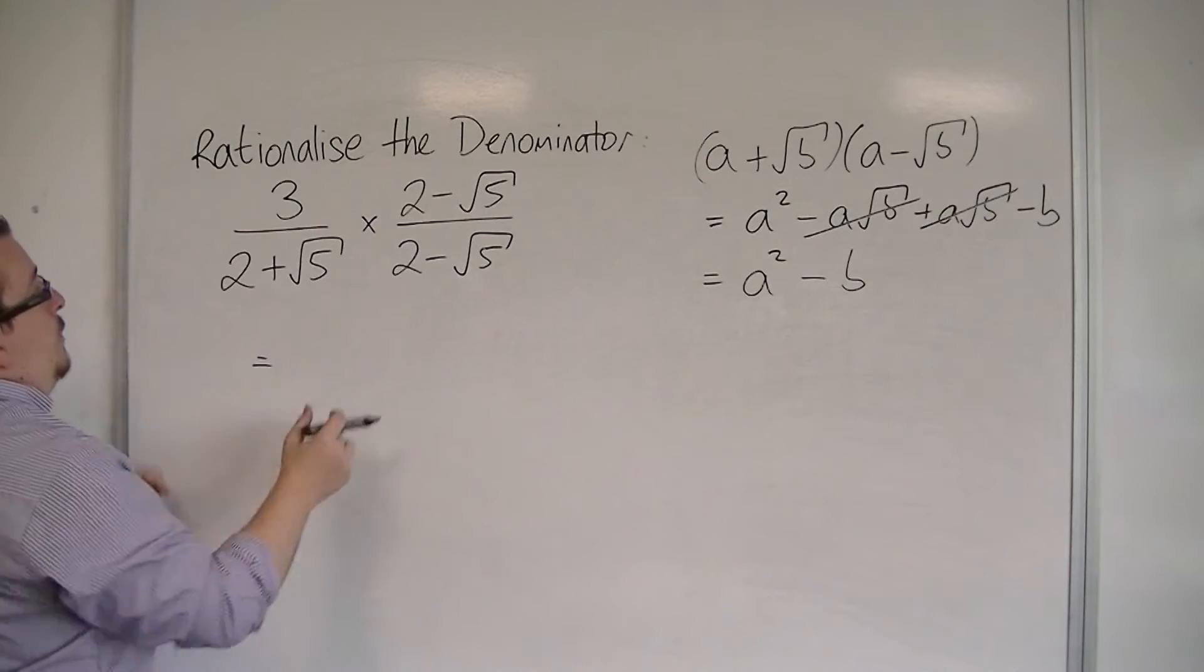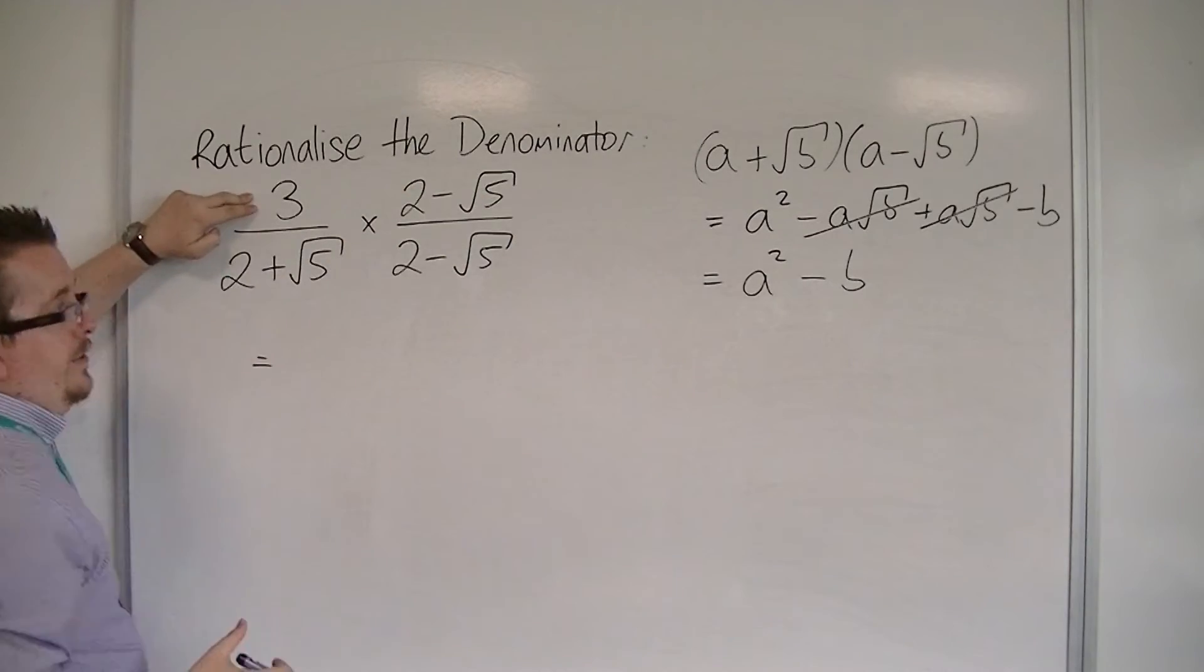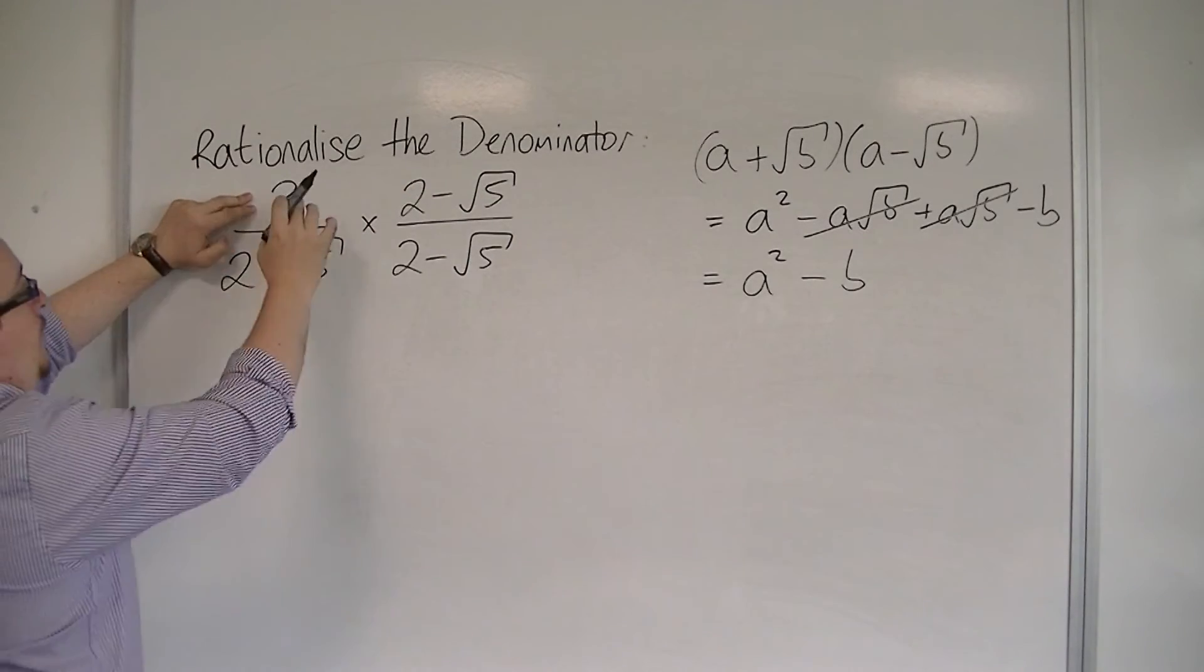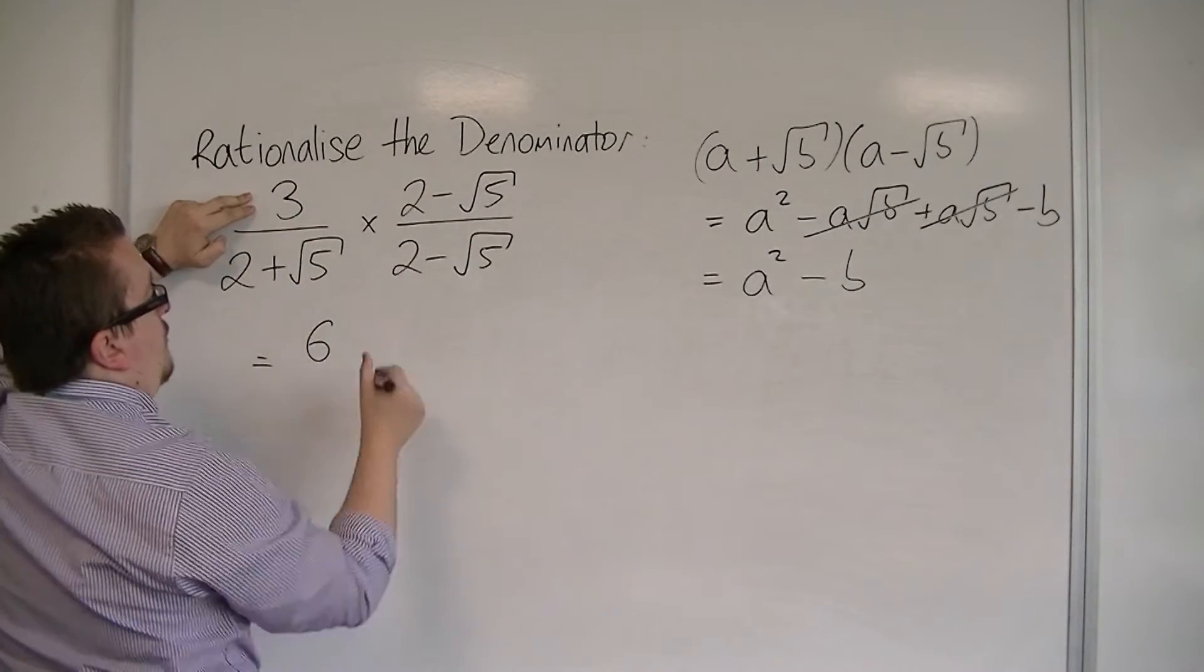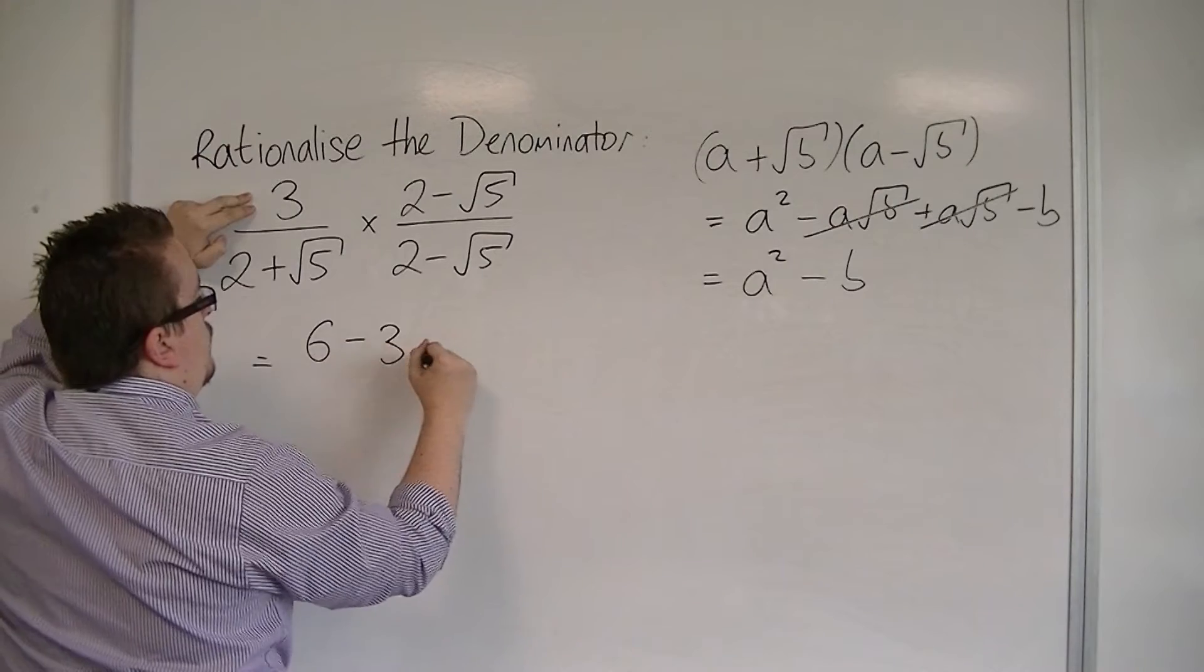So in the numerator, we have 3 lots of 2 minus root 5. So I have 3 lots of 2, which is 6, and 3 lots of minus root 5, which would be minus 3 root 5.